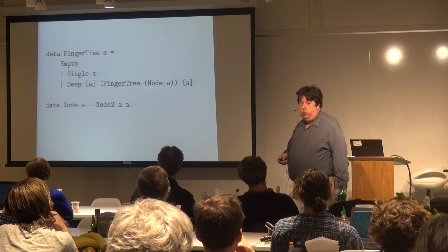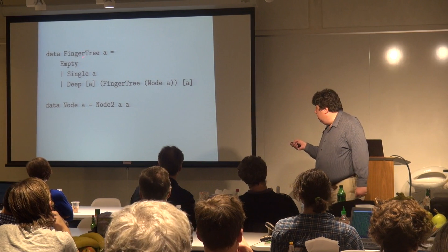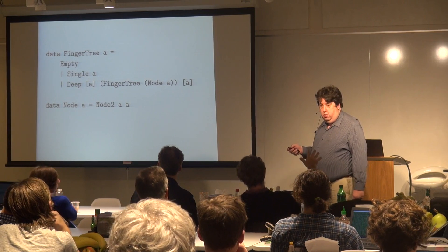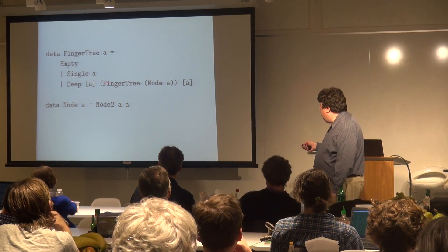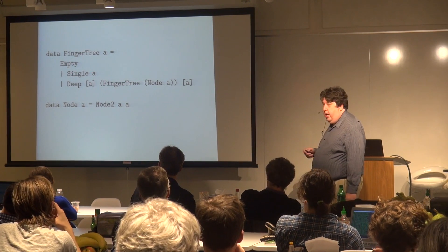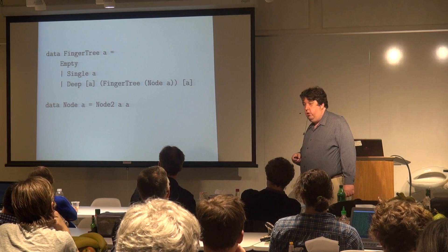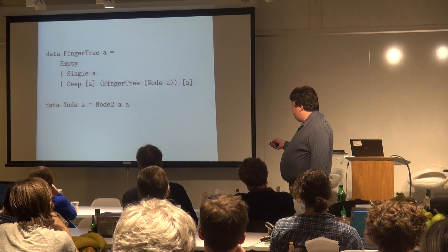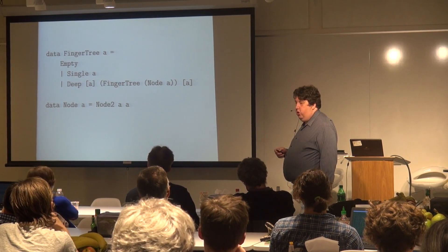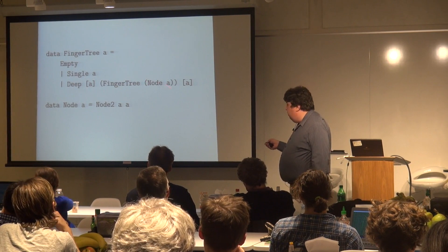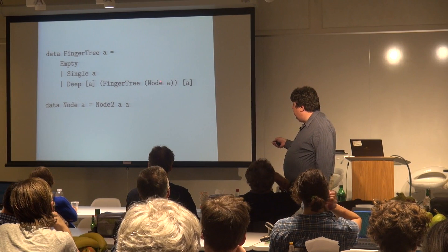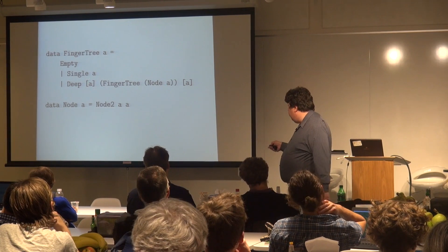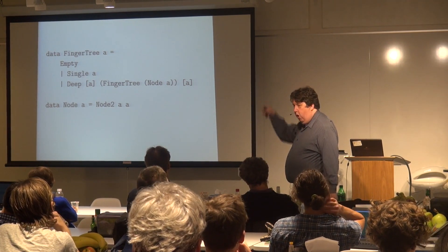We can define this data structure fairly easily. A finger tree of A is either an empty finger tree, a single element finger tree, or a deep finger tree — which has a list of head children on the left, a link to the next deeper finger tree (but it's a finger tree of node A, not of A), and a list of children on the right. We use Haskell's type system to enforce that every level has greater depth than the one before it.